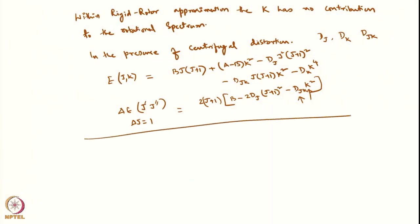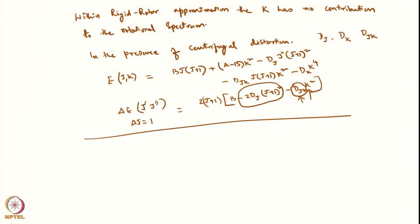We now see that the transition energy depends on K and the centrifugal distortion constant DJK. Only when centrifugal distortion is present — when the molecule is no longer a rigid rotor — do you start seeing effects of K. As K increases, the rotational levels become more and more closely spaced, so the lines come closer together.